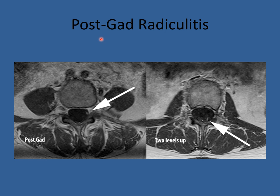There is a contrast agent we can give patients for MRI called gadolinium. Gadolinium lights things up and is useful in STIR and especially T1 images, but not in T2. This patient had continuing leg pain after recovering from a disc herniation. On T1, this nerve root lights up at one level, and going two levels up the same nerve root is lit up as it exits through the side. This is a radiculitis — an inflammation of the nerve root — versus a radiculopathy, which is compression of the nerve root.